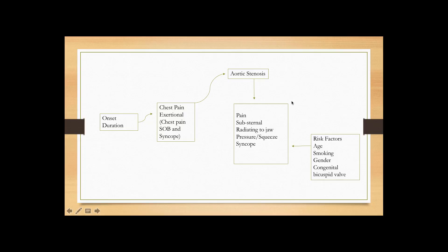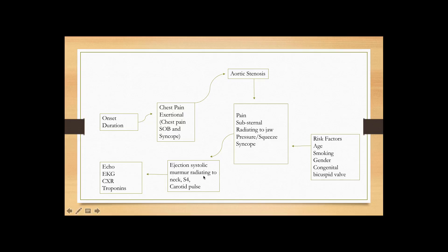Signs of aortic stenosis: on cardiovascular exam the patient may have an ejection systolic murmur radiating to the neck in the aortic area — very important to keep in mind. They may have an S4 because of LVH from stenosis, and their carotid pulse will be very weak with slow rise. The diagnostic test of choice is echocardiogram. EKG will probably show LVH, and chest X-ray may show some aortic arch calcifications. Troponins are usually normal but may show some leak if coronary ischemia is also present.